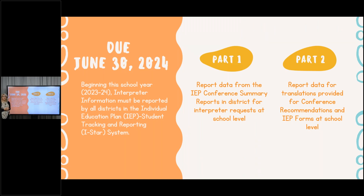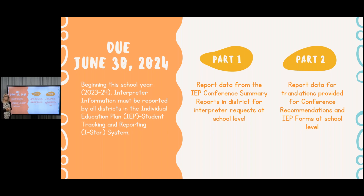The interpreter data collection is going to be on June 30th this year. All of the interpreter and translator data will be collected after that. It is an annual aggregate collection. This is not a per student collection. You're not going to see anything about this being collected on the individual student records. It has two parts, and part two actually has two areas for it.